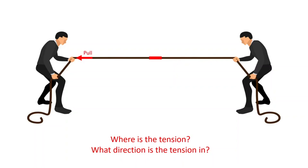Consider twins pulling a rope from opposite ends — the left twin with a red pull force, the right with a blue. Each twin can feel the pull of the other. For the right-hand twin, the left twin's pull is experienced as tension. If the left twin let go, there would be no tension. The same applies symmetrically for the left-hand twin.